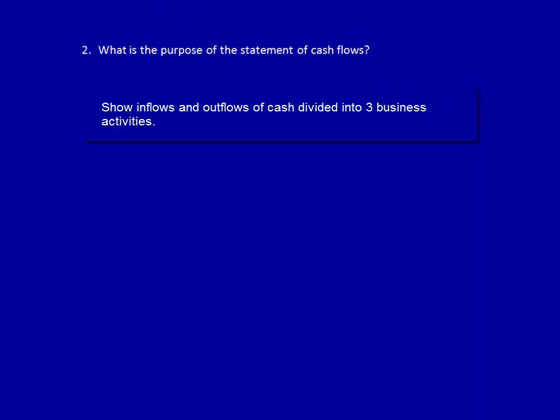What is the purpose of the statement of cash flows? The purpose is to show cash receipts (inflows) and cash payments (outflows) to the users of the financial statements. These inflows and outflows are further classified into the three activities of operating, investing, and financing. The information is used by creditors and investors to indicate the ability of the entity to generate cash and how the funds are being used.